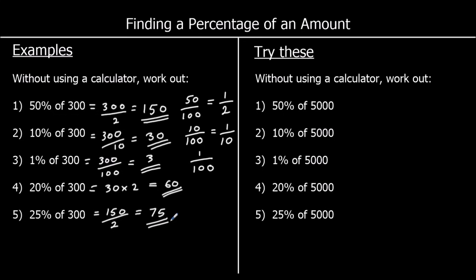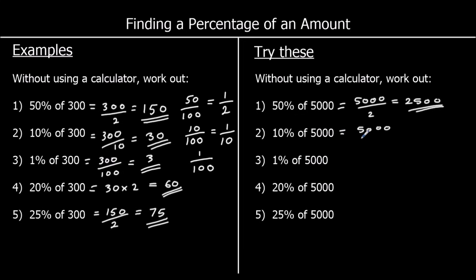Five questions for you to try, so give these a go. Question 1, we're finding 50%. To find 50%, we divide by 2. So 5,000 divided by 2 is 2,500. Question 2, we're finding 10%. To find 10%, we divide by 10. 5,000 divided by 10 is 500.